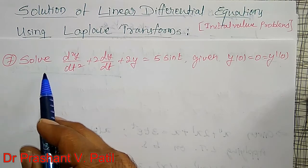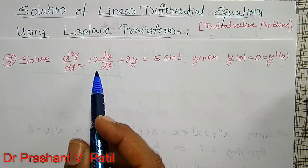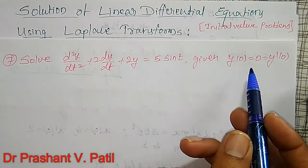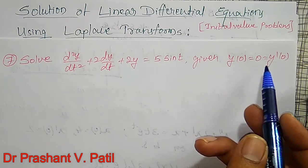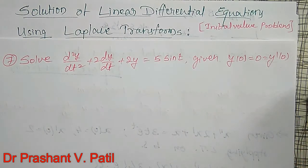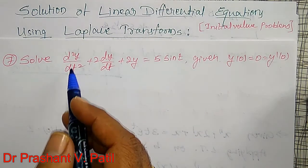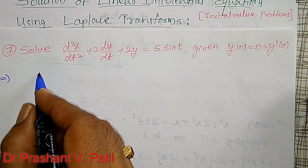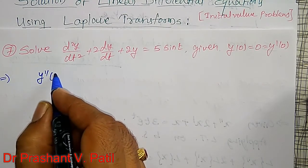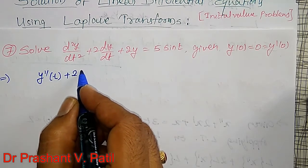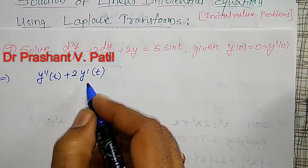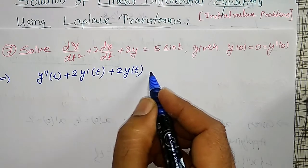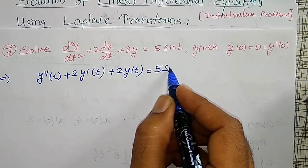My problem is: solve d²y/dt² + 2·dy/dt + 2y = 5·sin(t), given y(0) = 0 and y'(0) = 0. Here y is a function of t. The given equation I can write as y''(t) + 2y'(t) + 2y(t) = 5·sin(t).